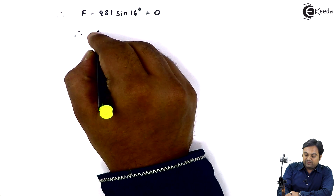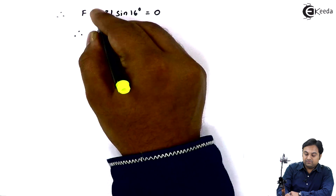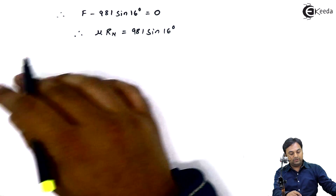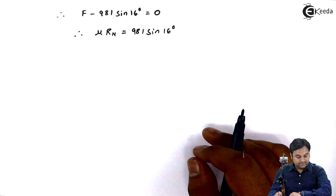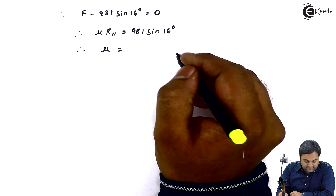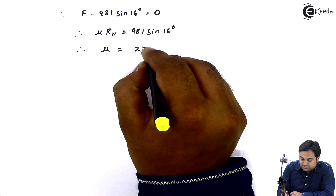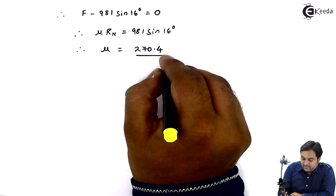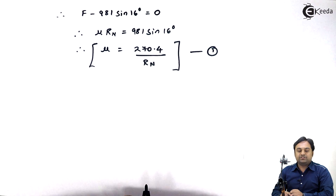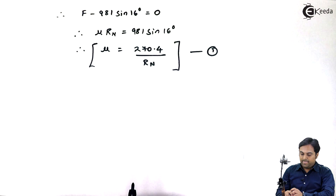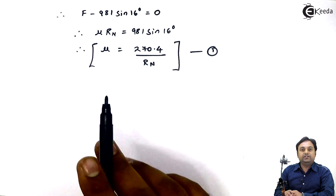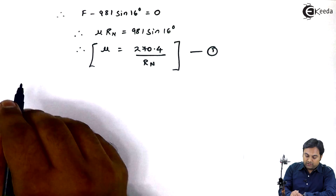From this, F equals μRn equals 981 sin 16. Therefore, μ equals 981 sin 16 divided by Rn. The value of 981 sin 16 is 270.4 Newton. This is equation number one. Since the coefficient of friction μ is what we need, we must find the value of normal reaction Rn and substitute it into equation number one to get the answer.